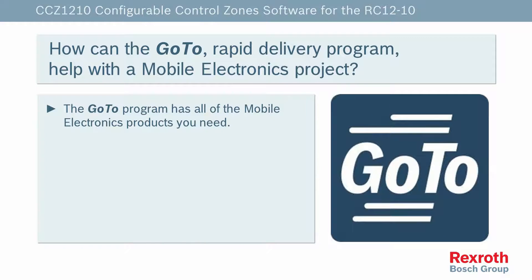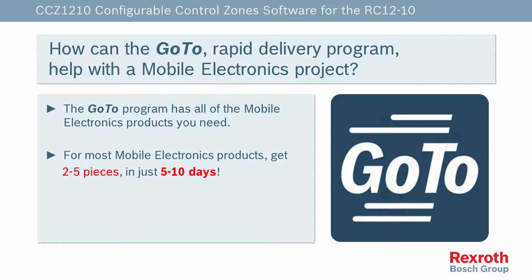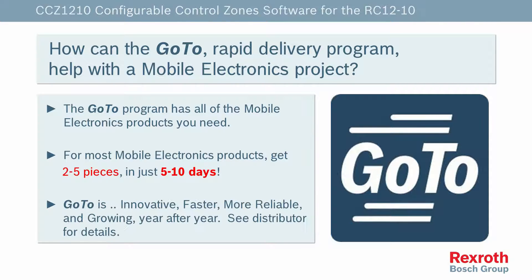The GoTo program is a rapid delivery program to help you get the parts you need when you need them. GoTo has all the mobile electronics parts you need to assemble and connect to a control zones project, most times in less than two business weeks. See your local distributor for details.